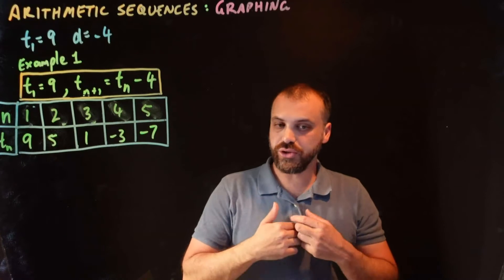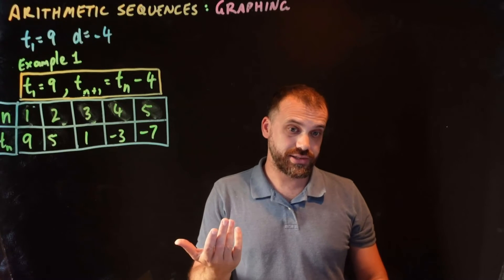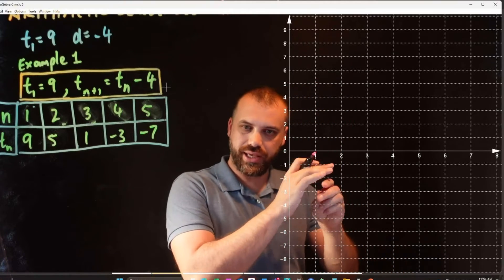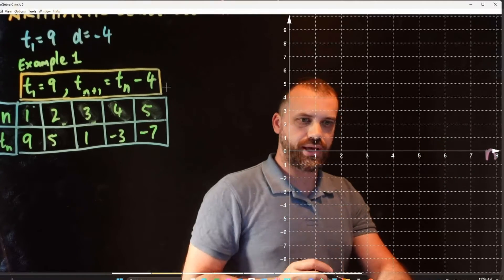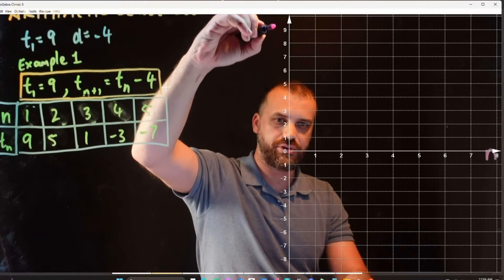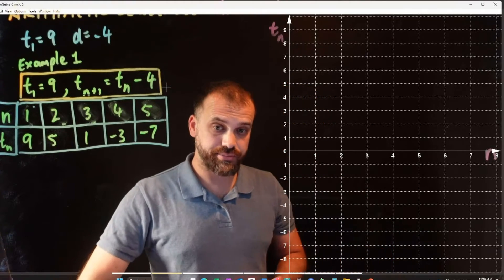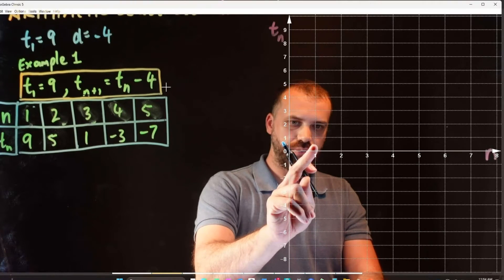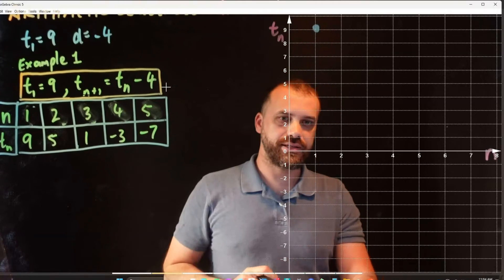Now that we've got that, we can graph it the same way that we graphed x's and y's in the past. Let's get a graph up and running. We're going to label our x-axis as n, and we're going to label our y-axis as term n, written t(n). Then we just get started putting in our points. So n=1, t=9 — there's our first point.